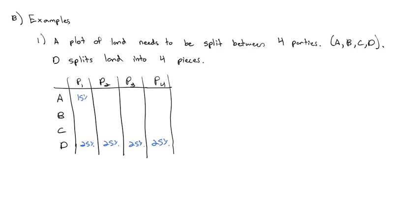Not everybody agrees with D. A believes piece one is worth 15%, piece two 30%, piece three 20%, and piece four 35%. B thinks piece one is 30%, piece two is 35%, piece three is 10%, and piece four is 25%. C has her own opinion: 20% for piece one, 45% for piece two, 20% for piece three, and 15% for piece four.